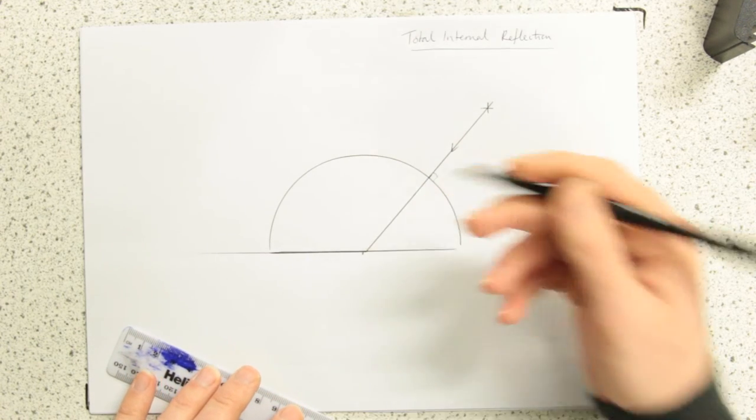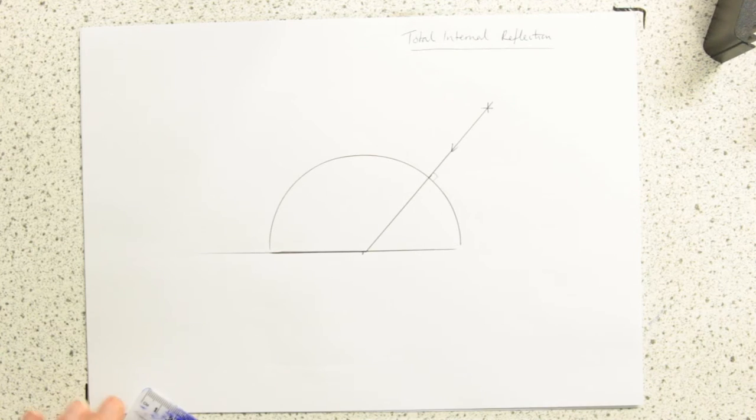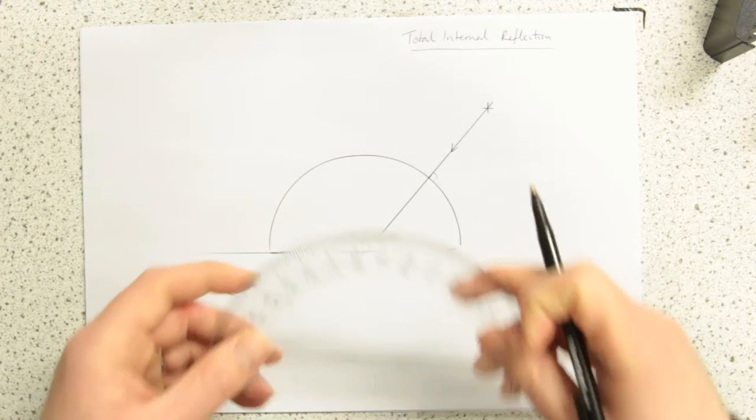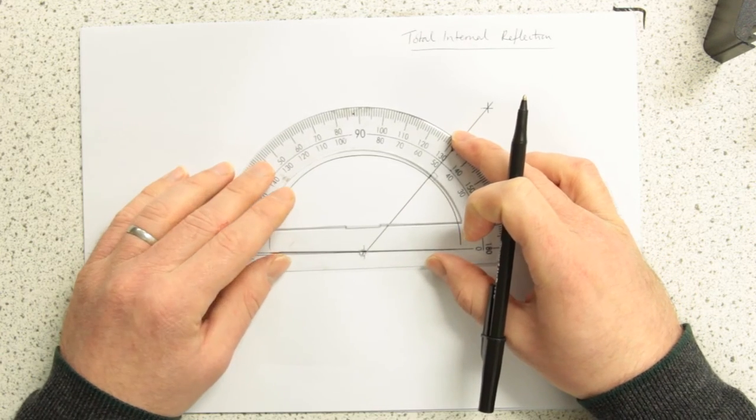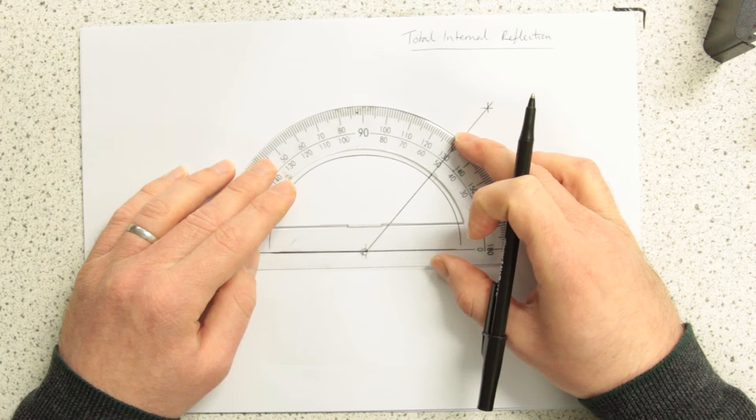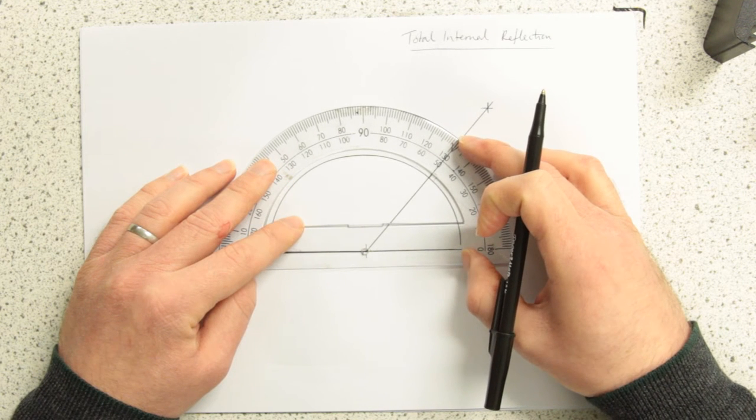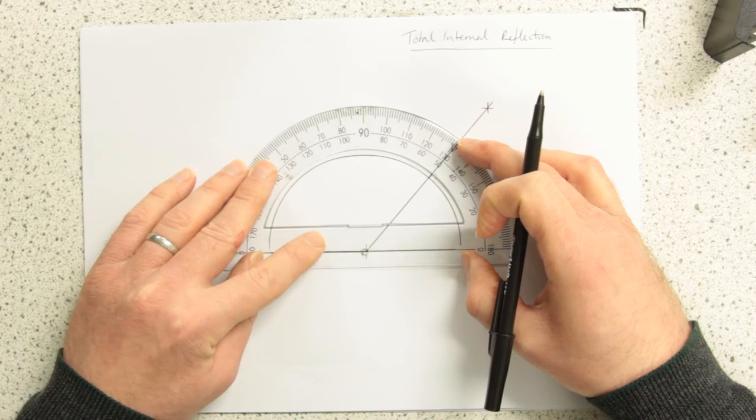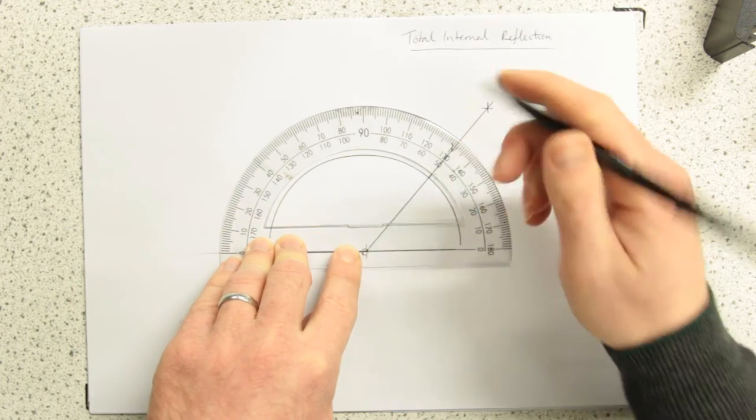We're interested now in this angle here. We always measure rays between themselves and a normal. And I'm going to use the mark to it. I know I'm actually a couple of millimetres out there, but I'm going to use the marking where my pen mark was.